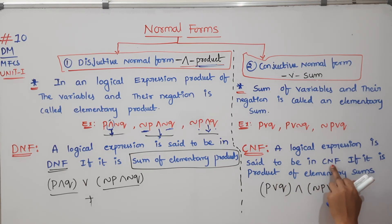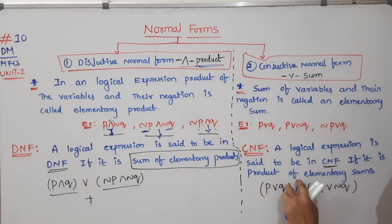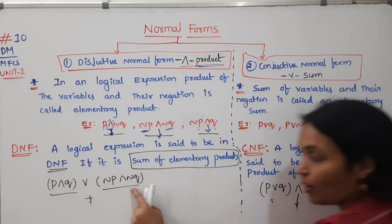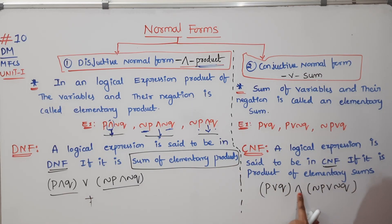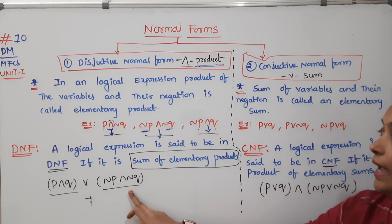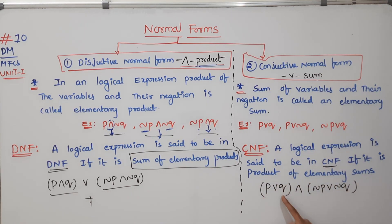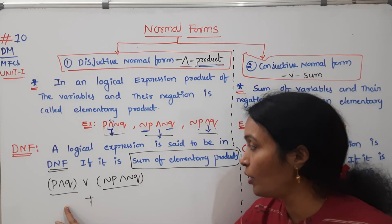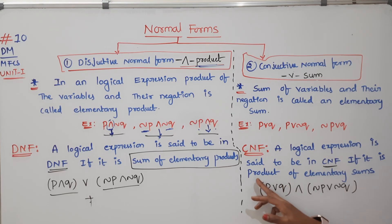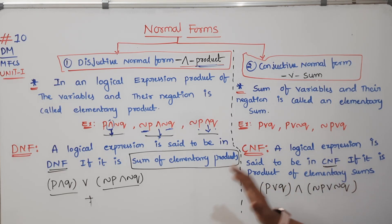The logical expression is said to be CNF — Conjunctive Normal Form — when it is expressed as a product of elementary sums. So: sum of elementary products is DNF, and product of elementary sums is CNF. They are opposite to each other.